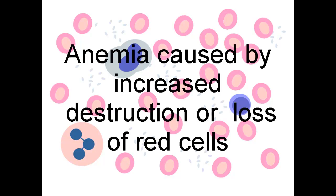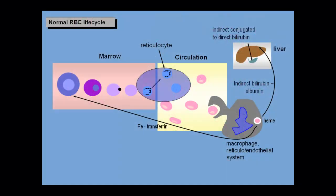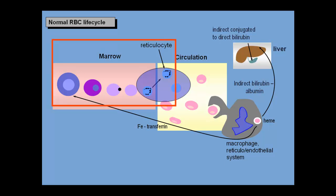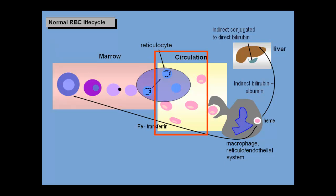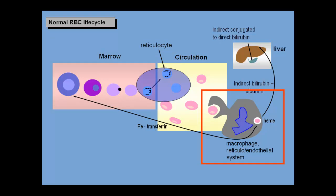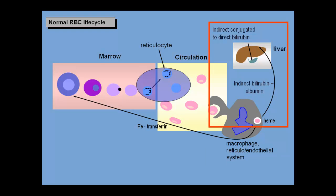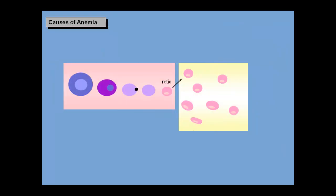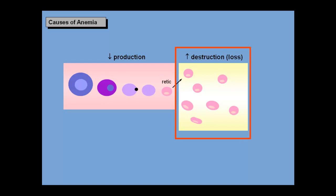In this video, we will review anemia caused by increased destruction or loss of red cells. In another video, we reviewed the red cell life cycle, emphasizing the maturation from erythroblast to reticulocyte, the 120-day lifespan in the circulation, the removal of old red cells by macrophages in the reticuloendothelial system, and the catabolism of heme to bilirubin. In this session, we will cover the destruction side of the equation.